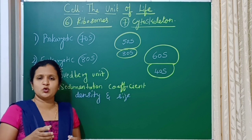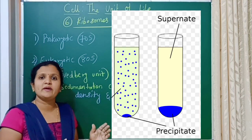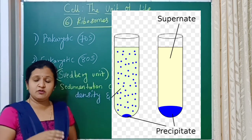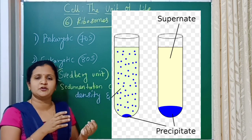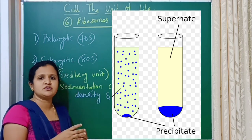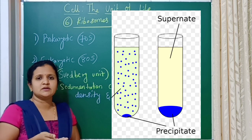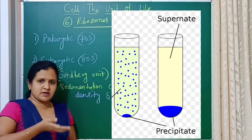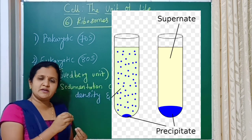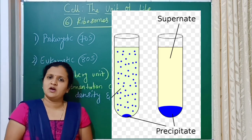To understand how the sedimentation coefficient indirectly measures density and size: if you take a liquid suspension in which particles are suspended and allow it to stand without disturbance for a few hours, you can observe that heavier particles settle to the bottom while the lighter liquid remains above. This settling is called sedimentation. For bigger particles, this separation happens automatically after a few hours.